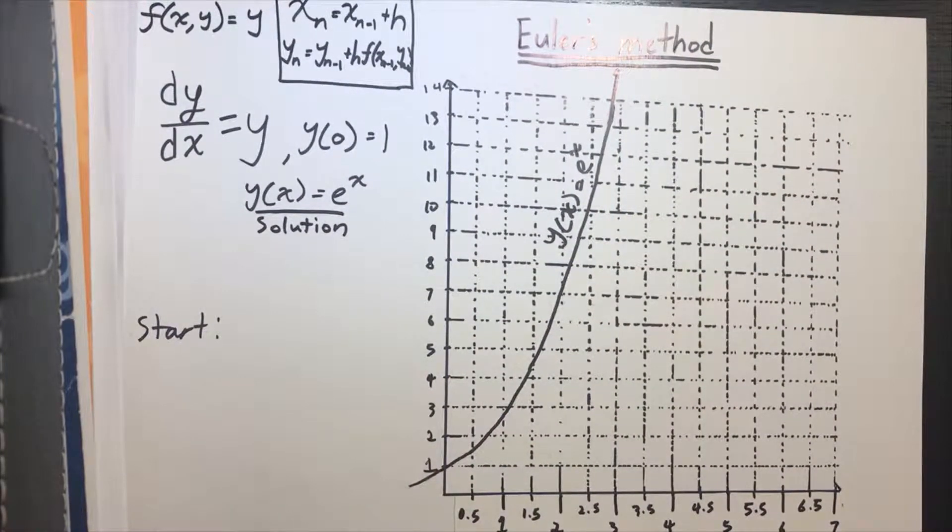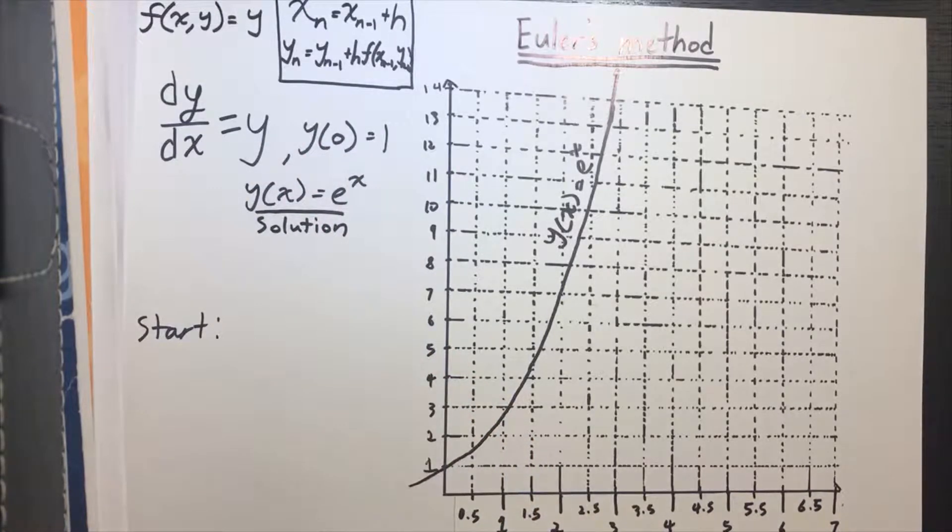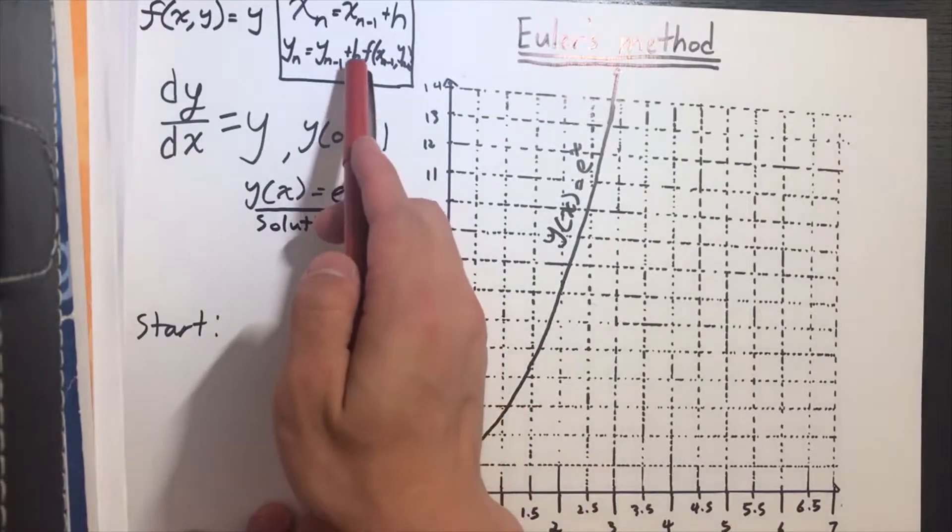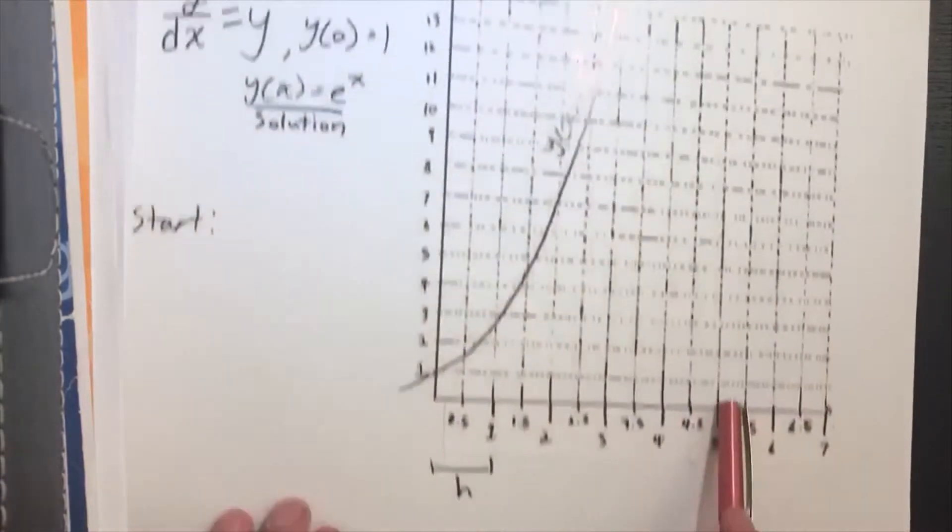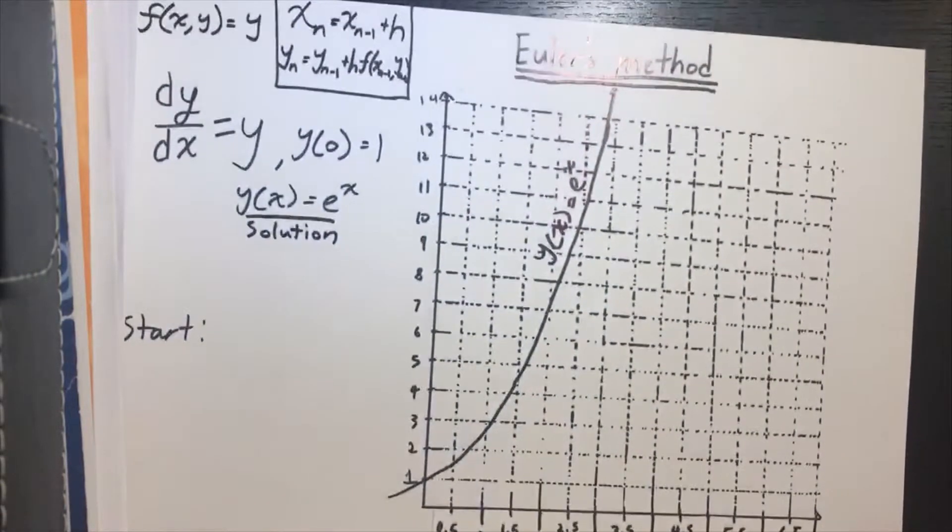In order to use Euler's method to solve this differential equation, you need to find a distance first. By distance, I mean the h value in this equation. For today's purpose, I will use h = 1 to solve this equation.